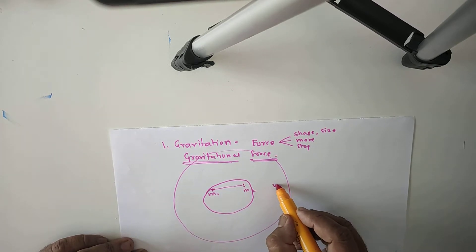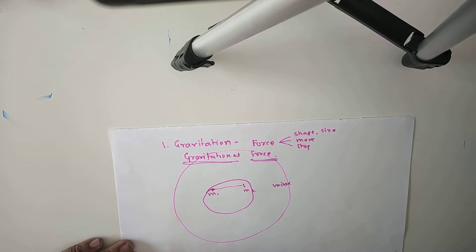This is the universe. In universe there are galaxies, many solar systems, planets, many suns. In between them also, between any two objects, there is a gravitational force.